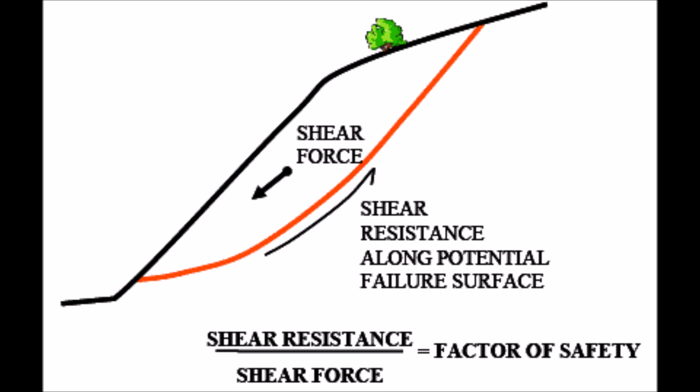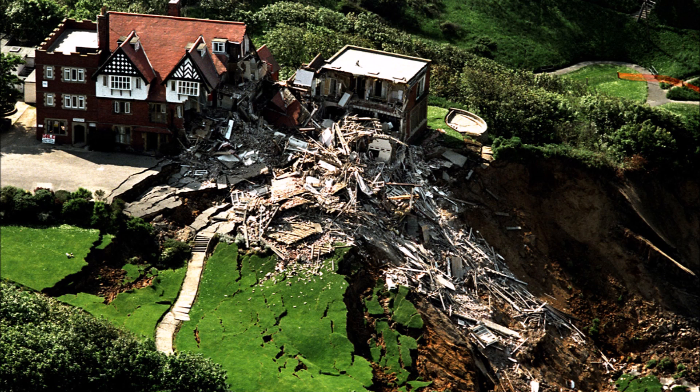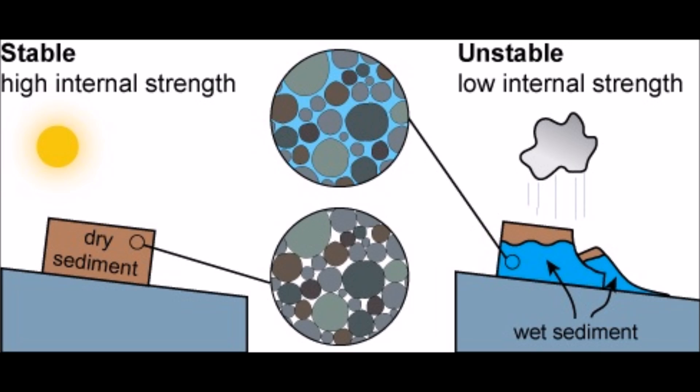Resisting forces include shear strength, internal friction, and slope support such as vegetation and retaining walls. Driving forces include gravity, adding to the load, removing slope support, and interaction with water, which can reduce the shear strength by increasing the pore water pressure.